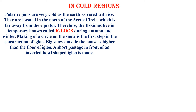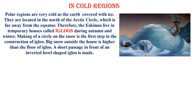Coming to cold regions — polar regions. Polar regions are very cold as the earth is covered with ice. They are located north of the Arctic Circle, which is far away from the equator. Therefore, the Eskimos — the people living in the polar regions — live in temporary houses called igloos.